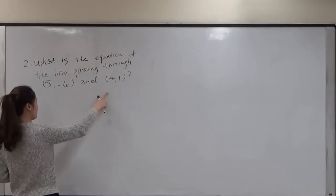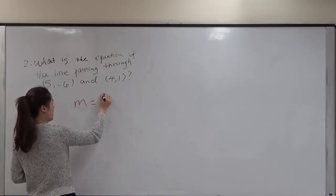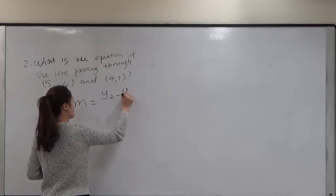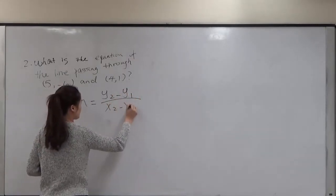We know because we have two points so we have to use the slope formula. m equals y2 minus y1 over x2 minus x1.